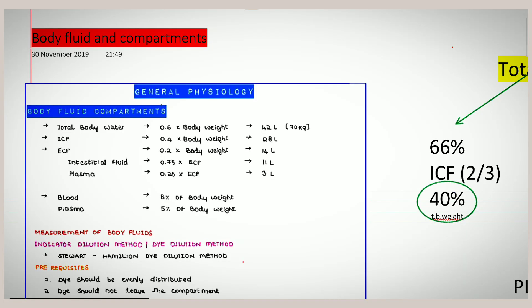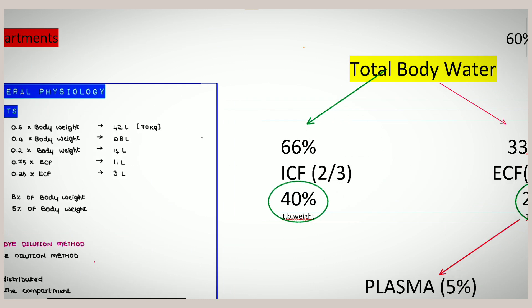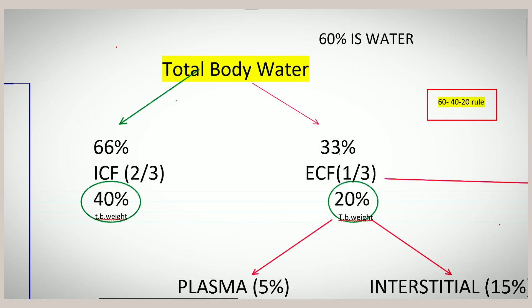This is the first lecture in general physiology on body fluid and compartments. This is the biophysics part of general physiology, and you may get direct numerical-based questions from this part where you have to select the most suitable answers. Let us start a discussion about total body water.